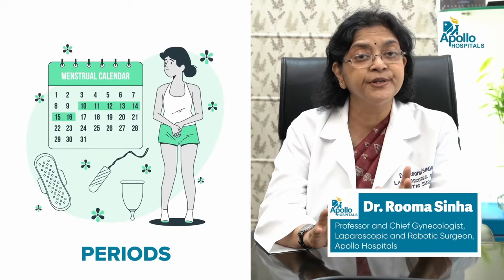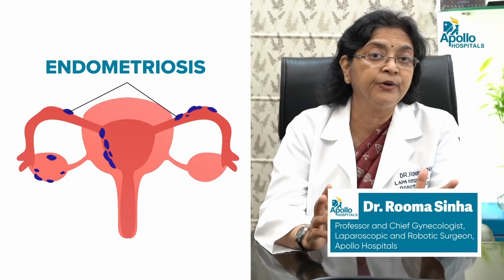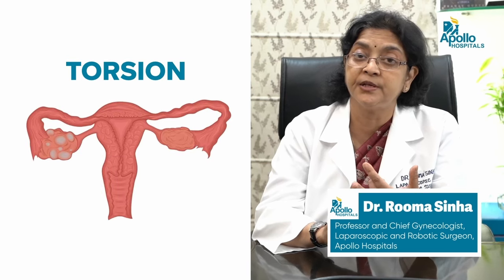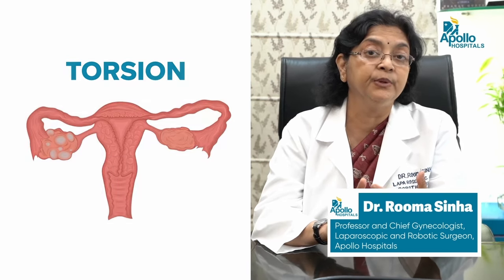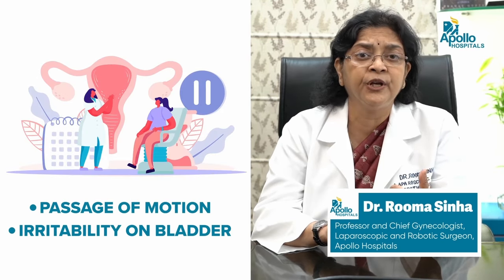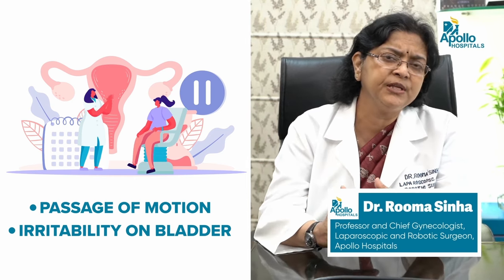Ovarian cyst pain can be a dull aching pain due to stretching of the ligaments and peritoneum, or cyclical pain during periods because of congestion in that area. It can also give rise to excruciating pain when the cyst undergoes torsion, sometimes requiring emergency treatment. It can cause pain during defecation if there is pressure on the rectum, or bladder irritability if the cyst sits on the bladder. However, most cysts are painless and asymptomatic.